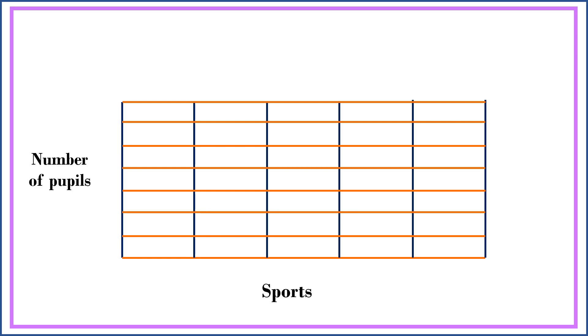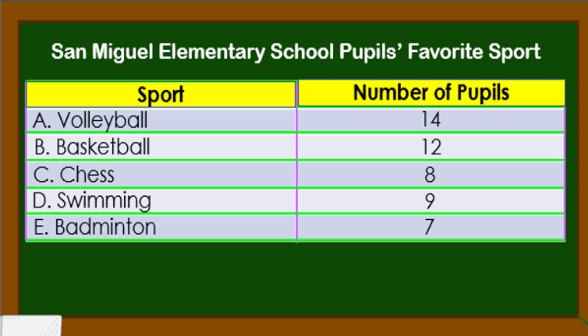For the vertical axis, we have volleyball, basketball, chess, swimming, and badminton. For our scaling, we start from zero up to 14. Then, let's plot the points from the table into our graph.